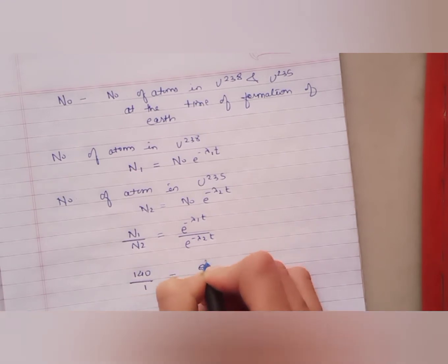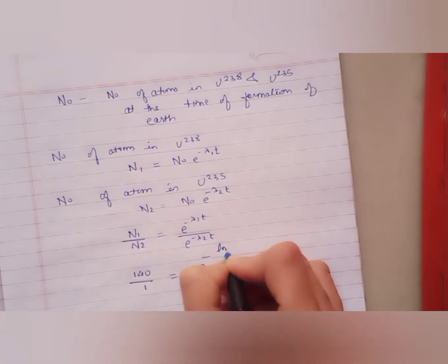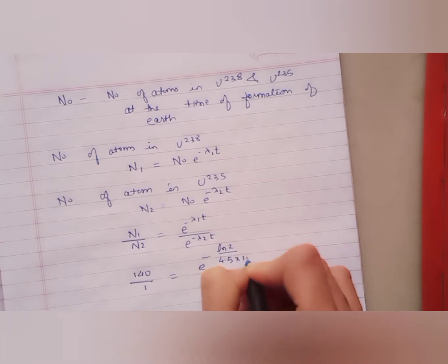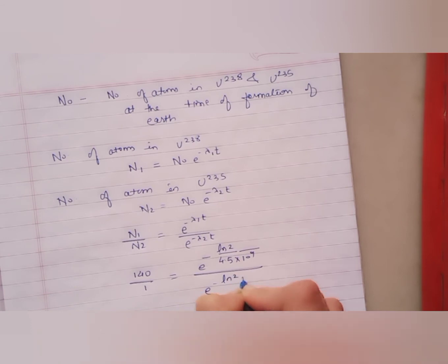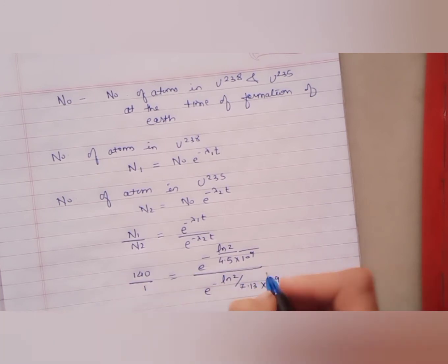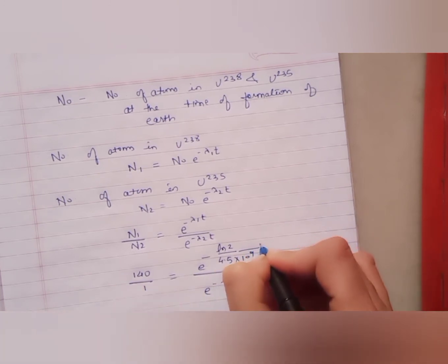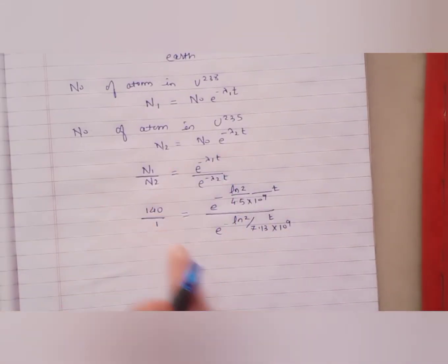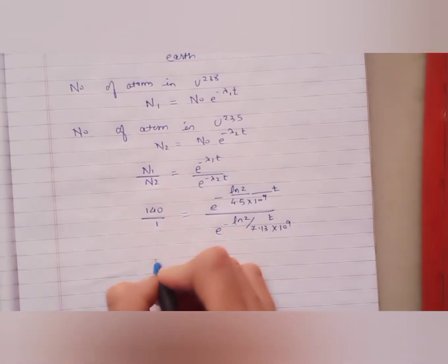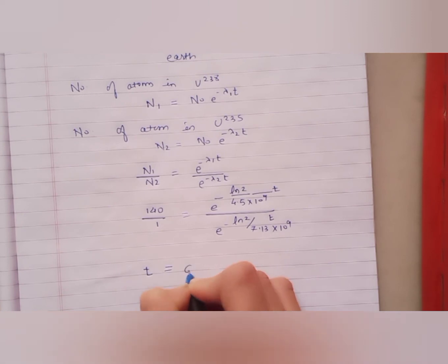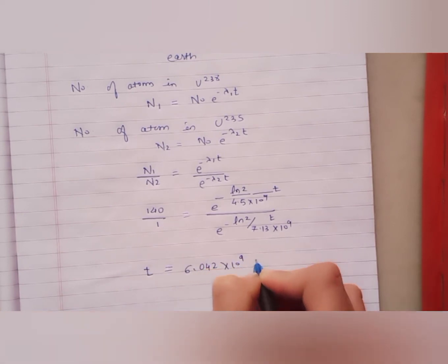Lambda is given by log 2 upon t-half. Half-life period for Uranium-238 is 4.5×10⁹ years, and half-life period for Uranium-235 is 7.13×10⁹ years. This is given in the numerical. This multiplied by t and this is also multiplied by t. If you do these calculations, you will get t equals 6.042×10⁹ years.